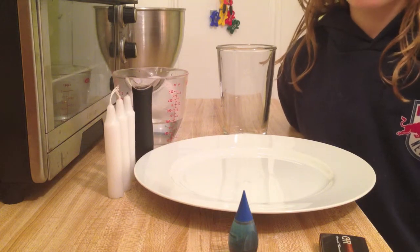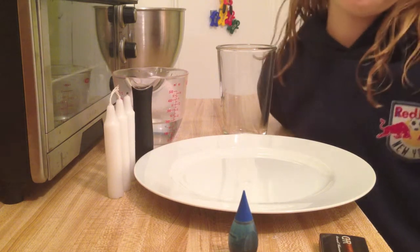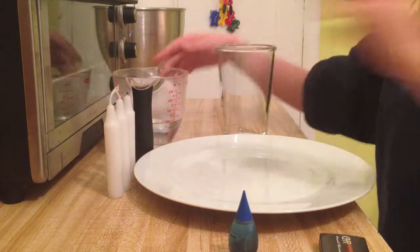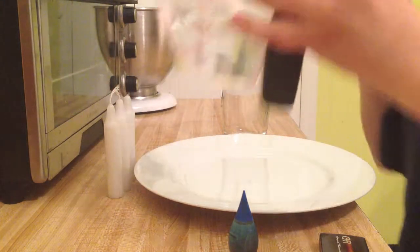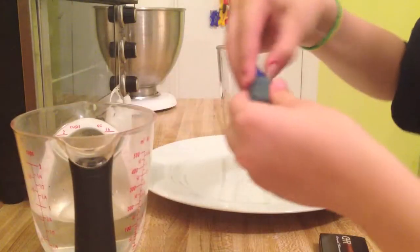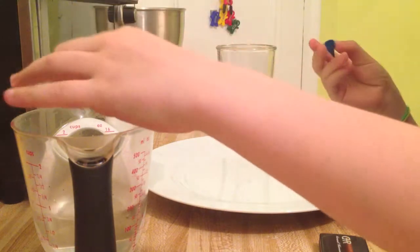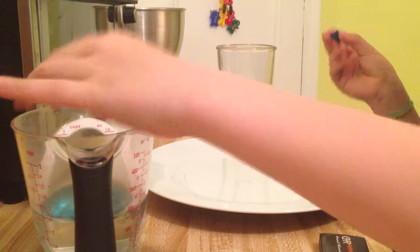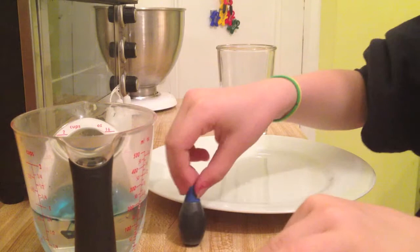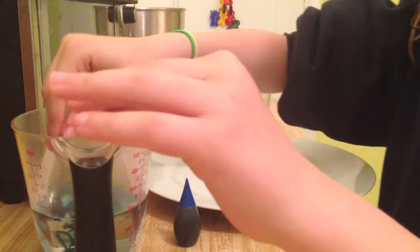So what we're doing is we're making a vacuum with candles. The first thing you do is take six ounces of water and drop two drops of food coloring into it. One, two. Then you take a small spoon and mix it around.